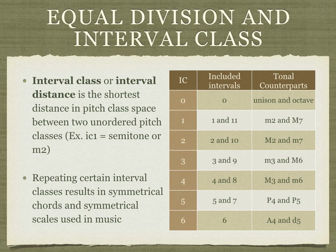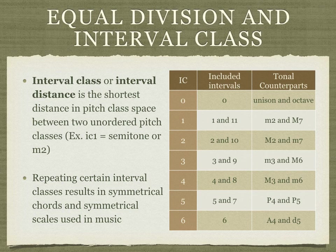Which intervals can be used to make symmetrical scales? There are six different interval classes, or interval distances, that are good candidates for creating a symmetrical scale. An interval class is the shortest distance between two pitches. For example, interval class 1 equals a semitone, or a minor second. Interval class 1 and interval class 11 are equivalent, as the shortest distance between a major 7th can be inverted to a minor second. If we repeat an interval class, the resulting cycle is a chord or scale that we can use to construct a symmetrical scale.